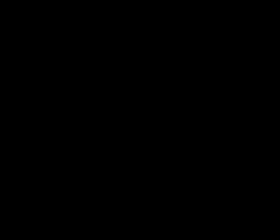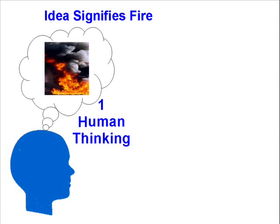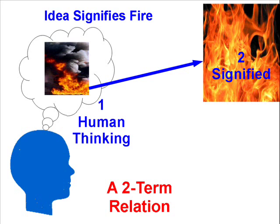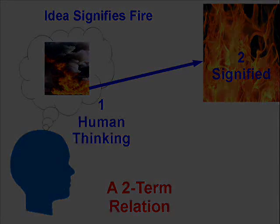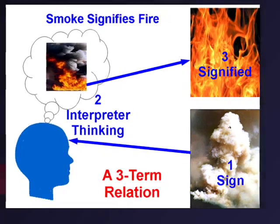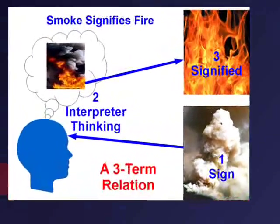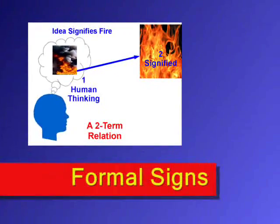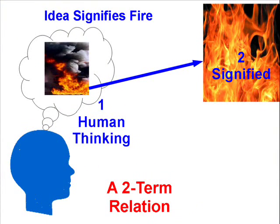Now let's think about a thought as a sign. A thought also points to something outside of itself — we can think of fire and it points to fire — but it does so in a different way. Whereas there were three terms in the relationship by which smoke signified fire, in the relationship by which thought signifies fire, there are only two terms: the thought and the fire signified. So there are two kinds of signs: those like fire and fog horns that signify by a three-term relationship, known as instrumental signs, and thoughts that only require two terms to signify, called formal signs.